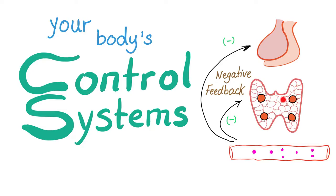You have your thyroid gland taking orders from the pituitary gland to secrete thyroid hormone in the bloodstream. If there is an excess amount of thyroid hormone in the bloodstream, it will produce something we call negative feedback. It will tell the thyroid to stop — we already have enough — and tell the pituitary to please stop producing TSH to stimulate thyroid hormone production.